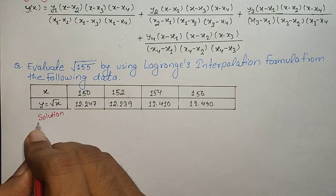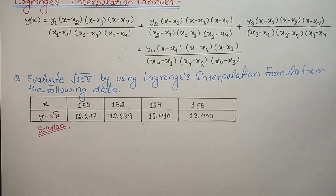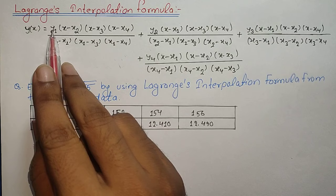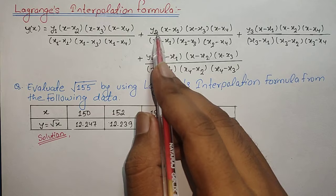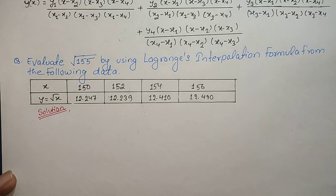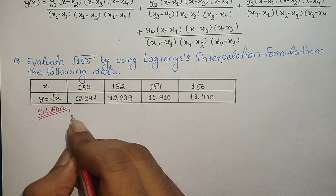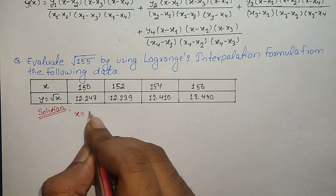Let us begin the solution. From the formula, we will frequently need the values of y1, x, x2, x3, x4, y4, y2, y3, etc. Since we are asked to find the value of √155, our x will be equal to 155.